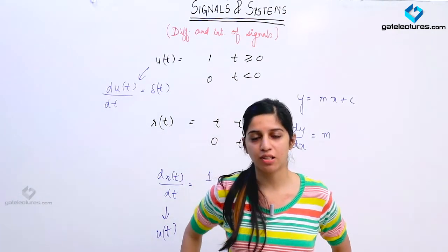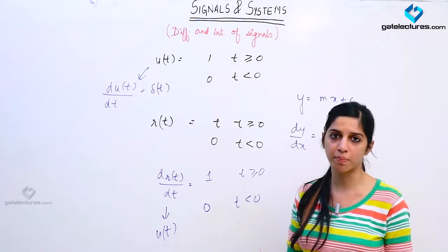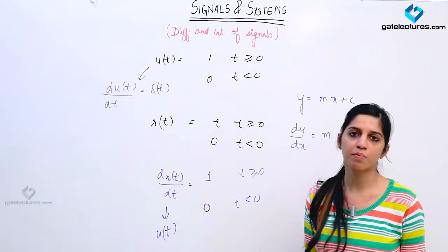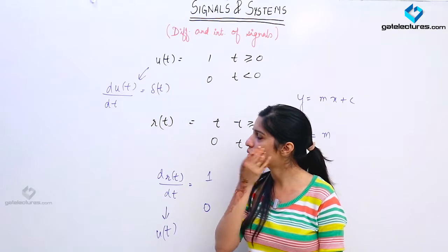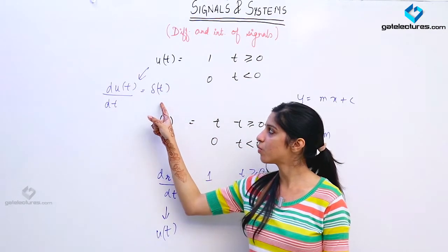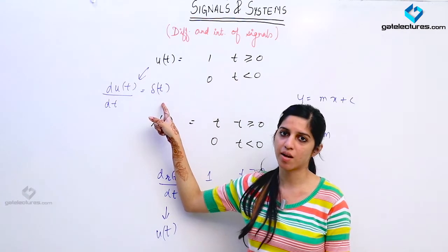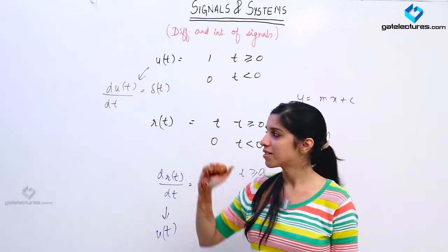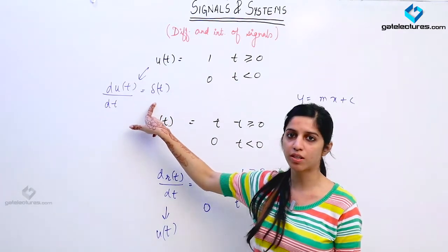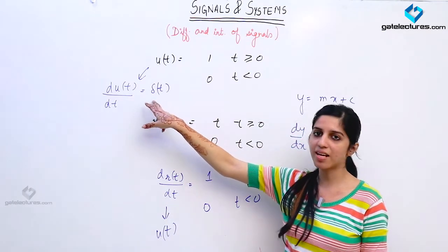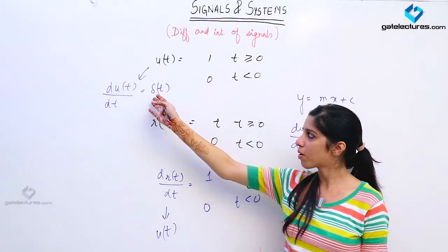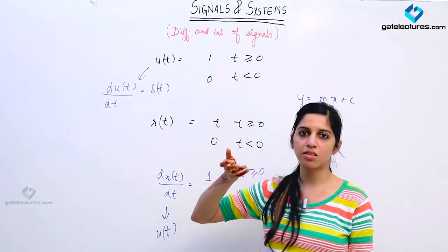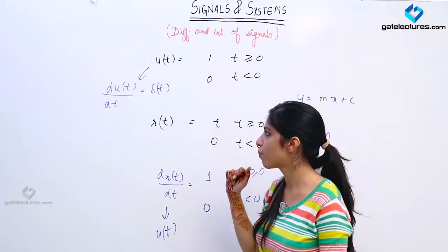The impulse has infinite value, so we cannot comment about the value of the impulse — we can only comment about the area under the impulse function. Generally we consider the area under the impulse function as 1. The impulse exists only at a single point of time, so you cannot define its area very clearly. We consider that it is existing between two boundaries where the two boundaries are approaching 0 — so the area of this impulse function is taken as 1.